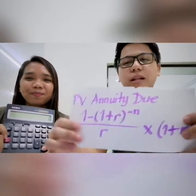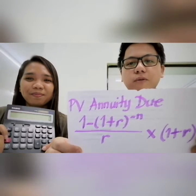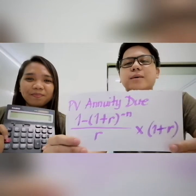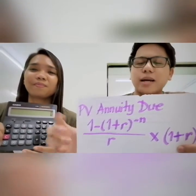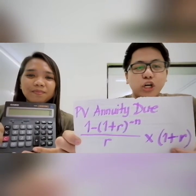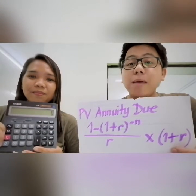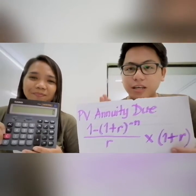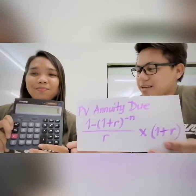Next up, we are computing for the present value factor of an annuity due. The formula is closely similar to the PV of ordinary annuity, except you have to multiply by 1 plus the rate. This accounts for the fact that with an annuity due, each payment earns interest for one additional period, because payments are made at the beginning of each period and not at the end.